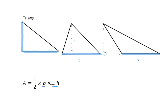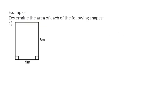Now let's go and have a look at how we can use these formulas. Determine the area of each of the following shapes. The first shape is a rectangle and for the area of a rectangle we are going to say length times breadth, which can be 8 times 5 or 5 times 8 to get to an area of 40 meters squared. It doesn't matter which side you choose to make the length and which the breadth — both will still give you an answer of 40. Remember that area is always a unit squared.